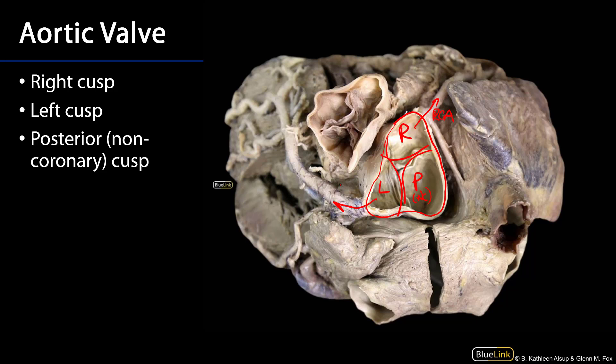There's the right coronary artery and there is the left coronary artery. We've discussed the various structures of the heart, going chamber by chamber through the features peculiar to each chamber, and the vessels and valves associated with each. Thank you very much for your time.